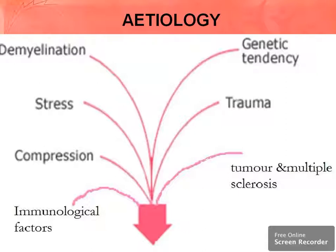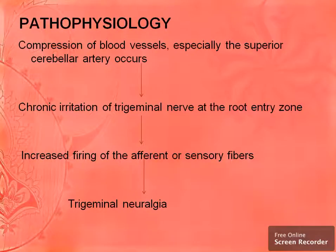In etiology, trigeminal neuralgia can be caused by demyelination, stress, compression, immunological factors, tumor, multiple sclerosis, trauma, or genetic tendency. Regarding pathophysiology, compression of blood vessels — especially the superior cerebral artery — causes chronic irritation on the trigeminal nerve at the root entry zone, which increases firing of afferent and sensory fibers, leading to trigeminal neuralgia.